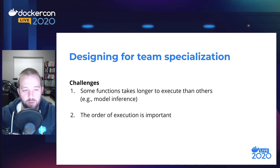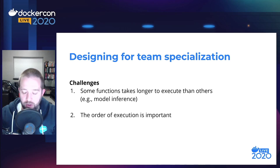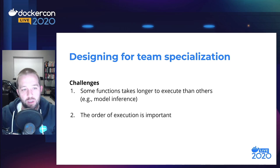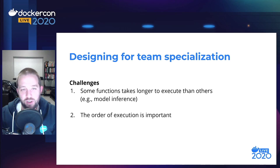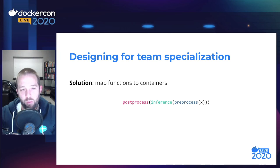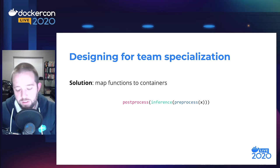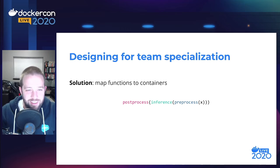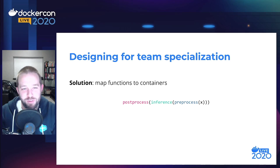There are a couple of challenges here. First, some of these functions — pre-process, inference, and post-process — will take longer to execute than others. The model inference will clearly take longer. But maybe pre-process is hitting external services like databases, which will probably take longer than post-process, which might just execute a simple policy like: whichever of 0.85 or 0.15 is greater is the prediction. The other main challenge is that the order of execution is very important, and we don't want to have to communicate this order of execution between the teams.